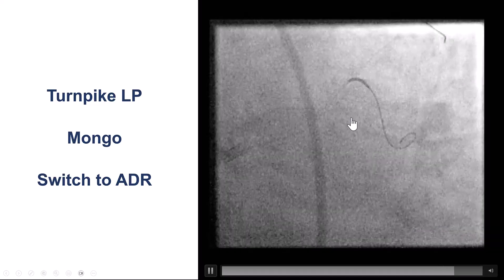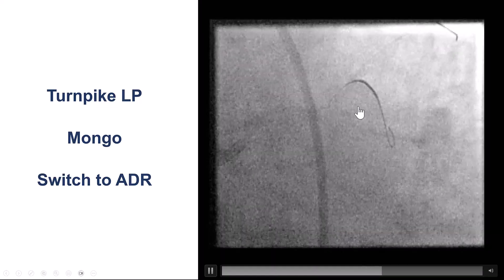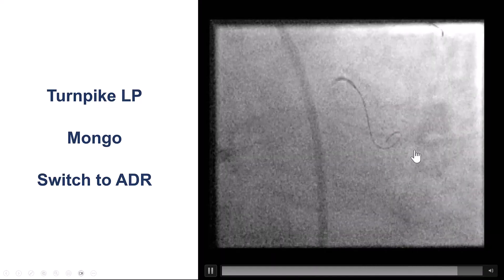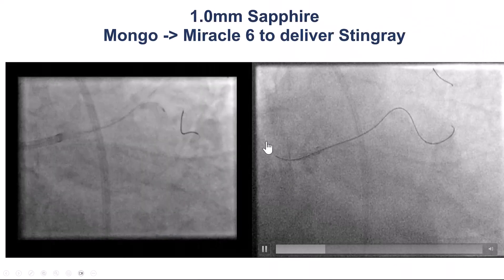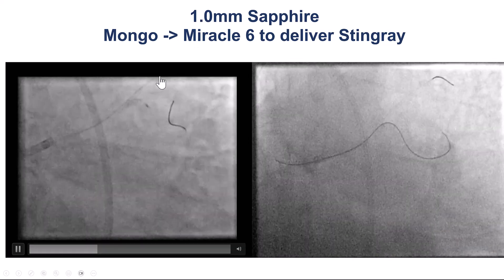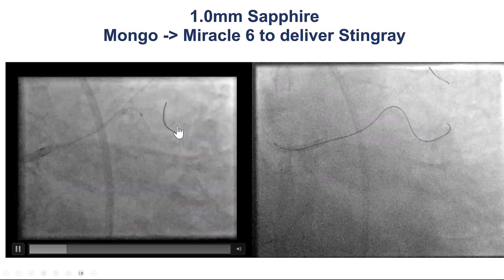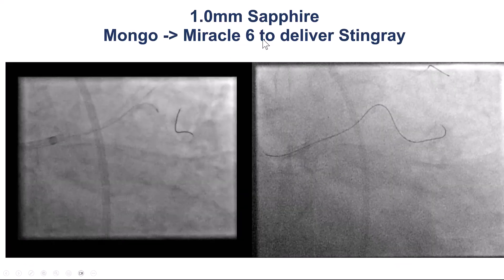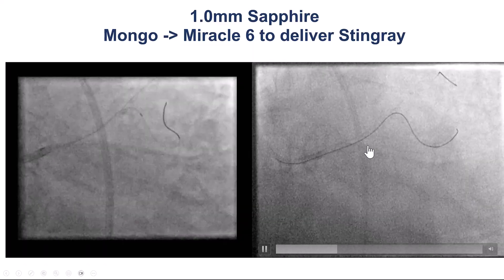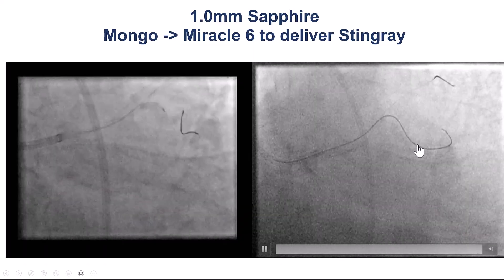After failure of antegrade wiring, we decided to switch to knuckling, to ADR. This is important for circumflex lesions because often there's a lot of tortuosity in the circumflex that is not immediately visible on the angiogram. We had a knuckle wire that seems to go along the course of the second obtuse marginal branch, and then we used a sapphire to be able to deliver a microcatheter further down, then switched to a Miracle-6, which is a wire used for delivering a device such as the Stingray balloon.